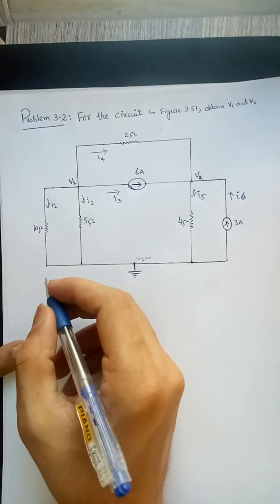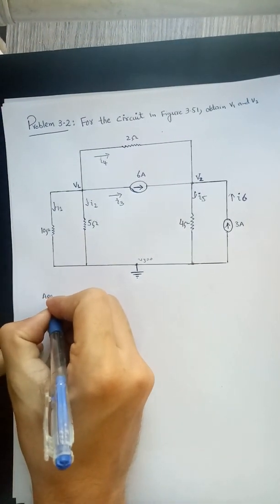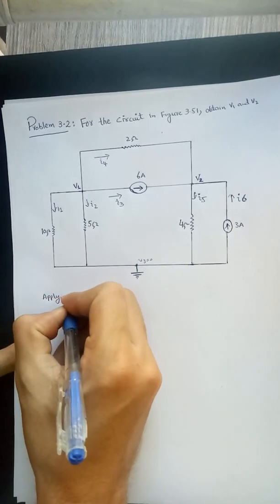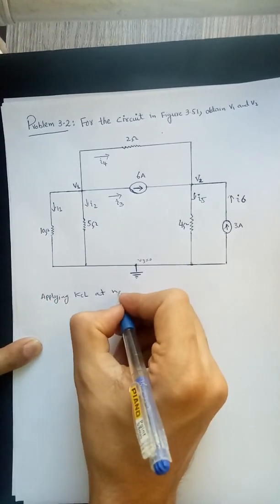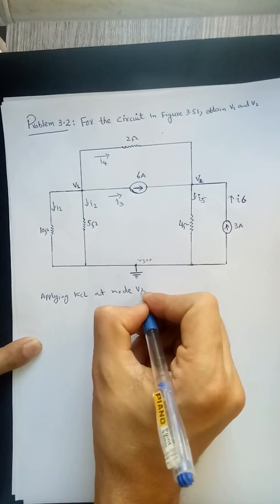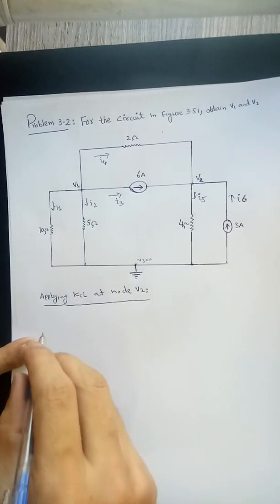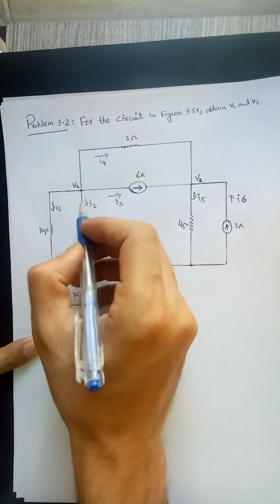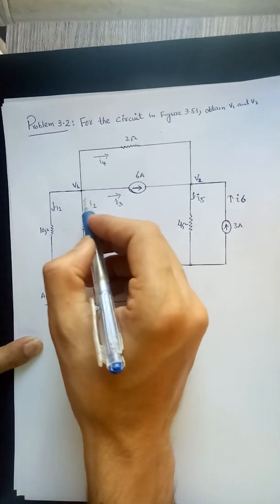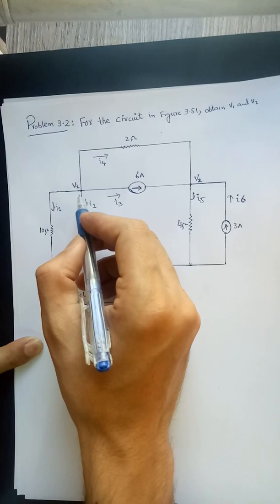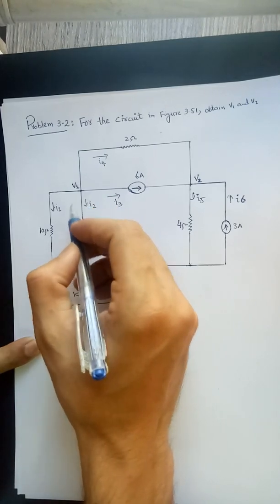So we can apply KCL at node V1. As we know, the algebraic sum of all currents entering or leaving a particular node is equal to 0. So all the currents are basically leaving. We don't have any current entering this particular node.